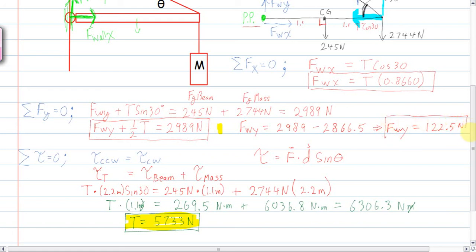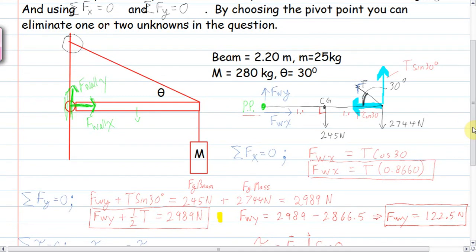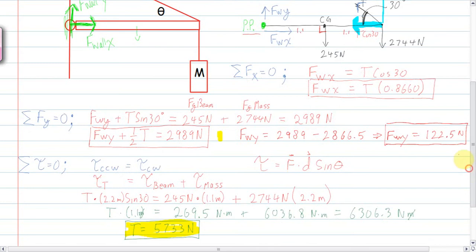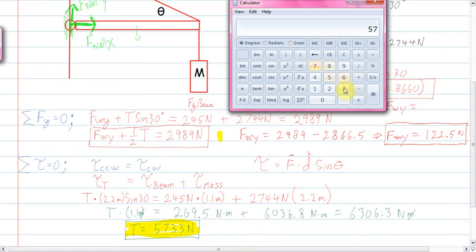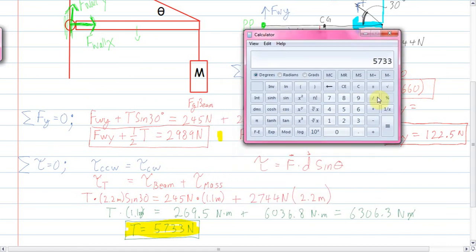And the last one that we have to figure out is the force of the wall in the x direction. Force of the wall in the x direction is going to equal that number. So 5733 times the cosine of 30, so it equals 4965.